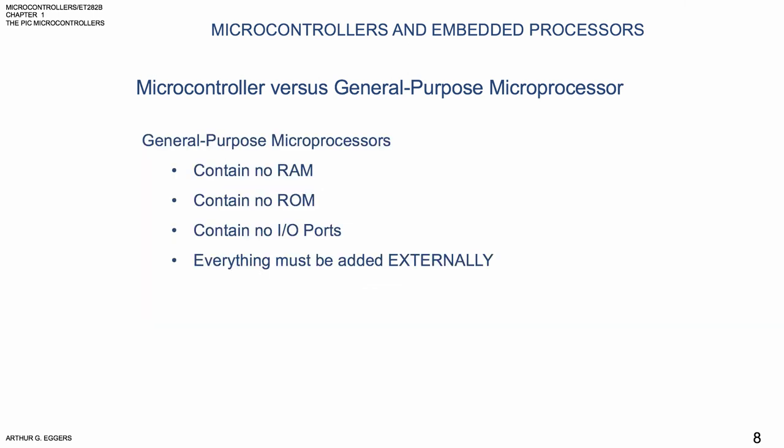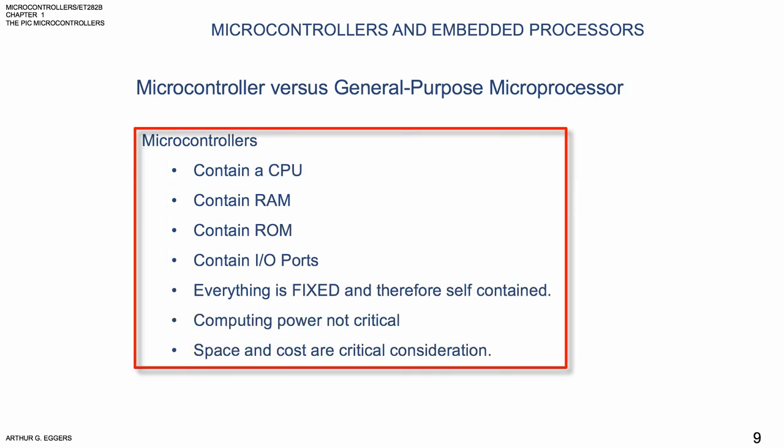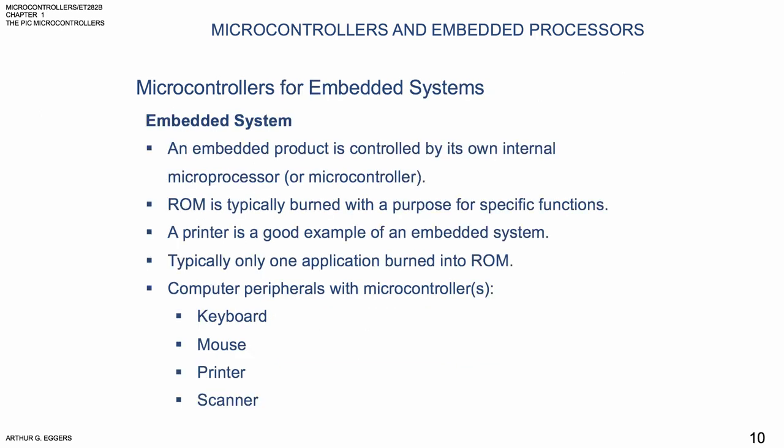The microprocessor does not have the components needed to make it functional, whereas on the microcontroller, we've seen that every one of these are in fact present. And we're going to learn that as we move along through the course — we're going to see that more and more.